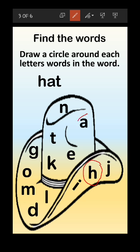Letter A is here. H-A-T, hat. Now we have to find out letter T - it's here. Spell it again: H-A-T, hat.